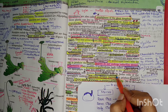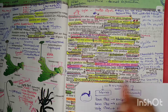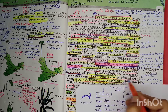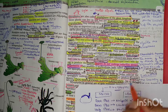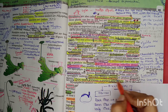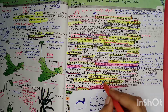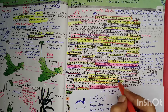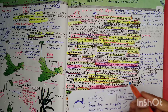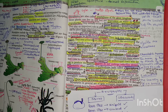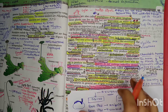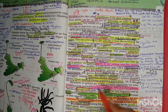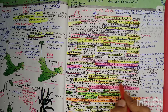The sporophyte is not free-living but is attached to the photosynthetic gametophyte and derives nutrition from it. This is called a dependent sporophyte - in bryophytes, the sporophyte is dependent on the gametophyte for nutrition. Only some cells of the sporophyte undergo reduction division (meiosis) to produce haploid spores.